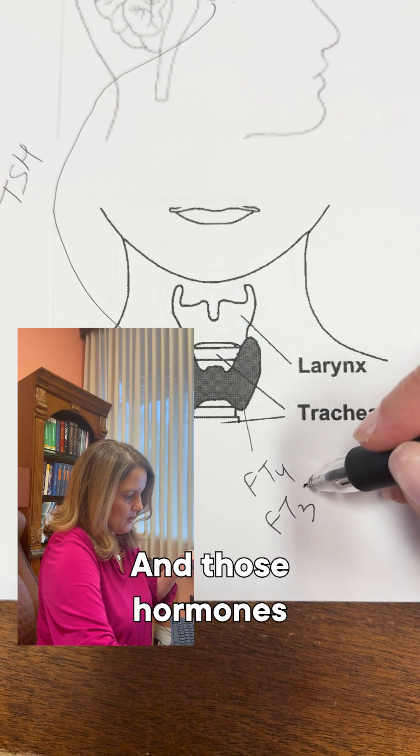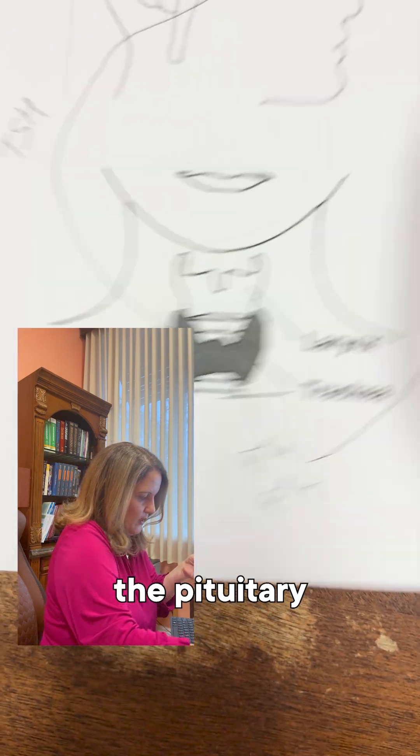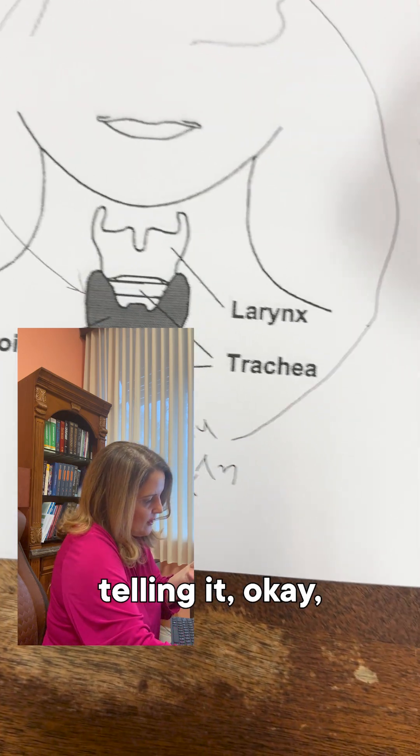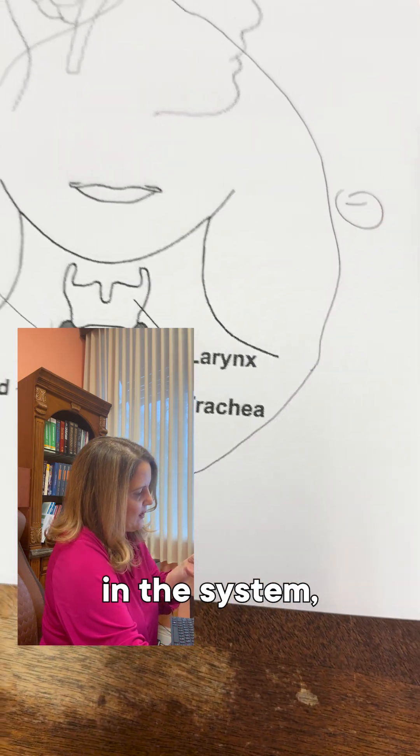And those hormones go back to the pituitary and exert negative feedback on the pituitary telling it, okay, we have enough thyroid in the system.